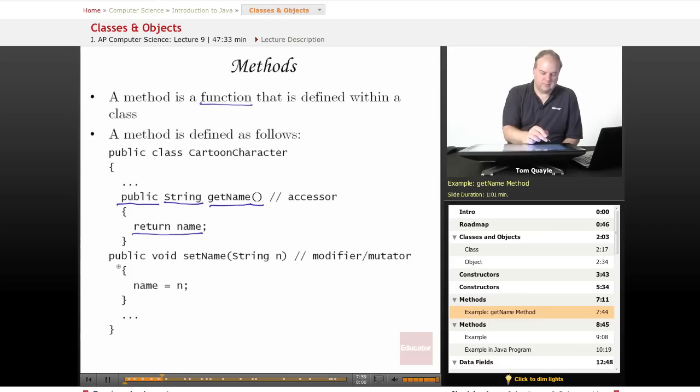Here's another method, also defined as public. This has a return type of void, which means it does not return anything. It's called setName, and it takes a string as a parameter, and it refers to that string with the variable n. And what it does is it sets the data member name equal to whatever is passed in as the string n.